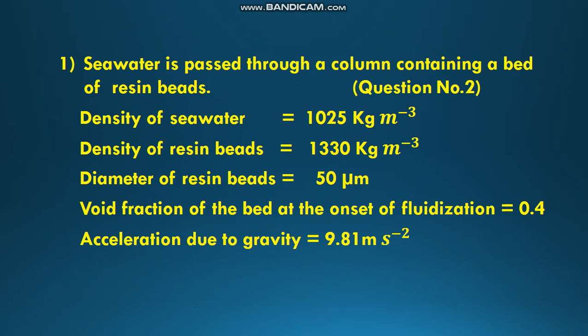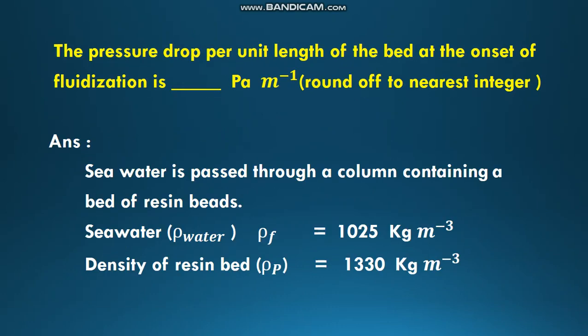First question: seawater is passed through a column containing a bed of resin beads. Density of seawater is 1025 kg/m³, density of resin beads is 1330 kg/m³, diameter of resin beads is 50 μm, void fraction of the bed at the onset of fluidization is 0.4, acceleration due to gravity is 9.81 m/s².